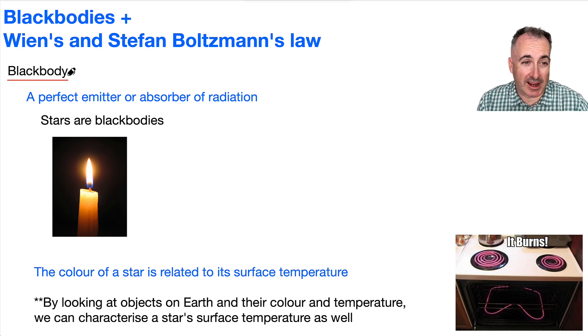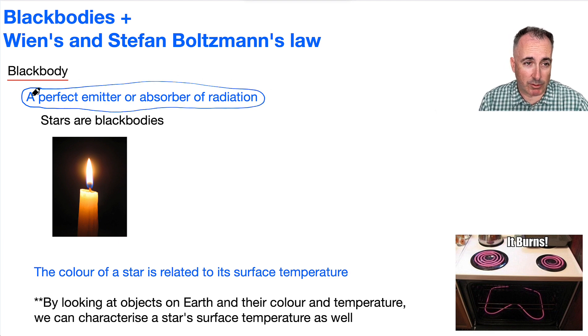So we're going to talk about something called a blackbody. And it sounds racist, but it's not meant to be. What we mean here is something that is perfectly black, which means it's a perfect emitter or absorber of radiation. And we're going to assume that stars are this.